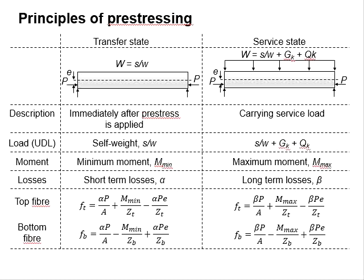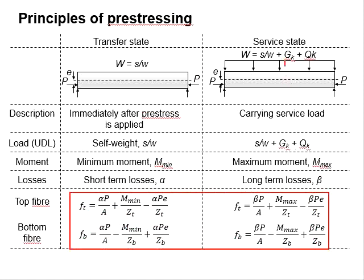Often, several sections need to be checked within a beam to represent the most critical situations. Taking a simply supported beam as an example, we might need to check the mid-span due to the largest moment, and the support due to the absence of moment. The stress may pass at mid-span but fail at the support. This leads to four equations at the mid-span and another four equations at the support.